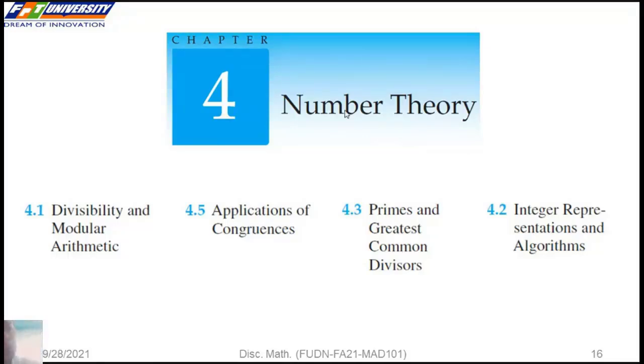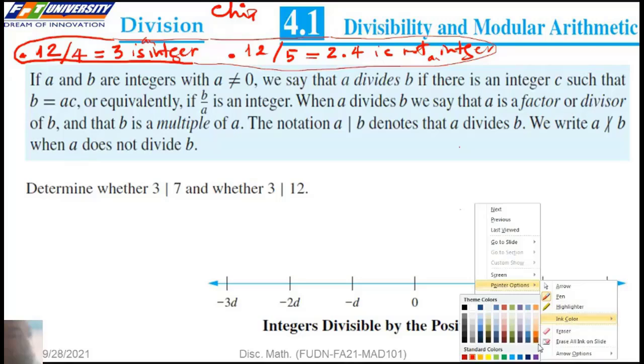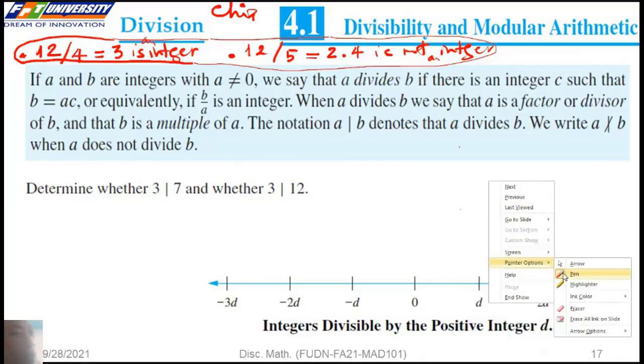In this chapter, if we talk about number theory, we introduce divisibility. When we have an integer, for example, we do a division. The result is 3. 3 is integer. But now, if we take 10 divide 5, the result is 2.4. 2.4 is not integer. We have two integers a and b. Suppose that a is not 0. We cannot divide by 0.